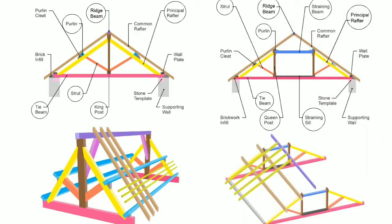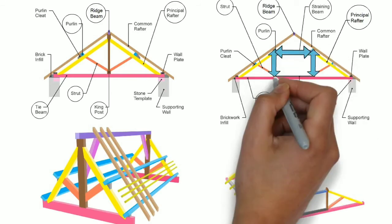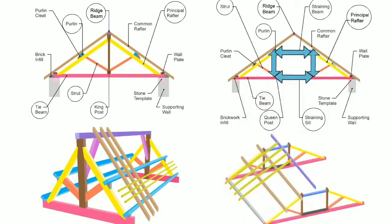Here we can see two queen posts, straining beam, and straining sill are additional. Otherwise, rest of the components are same as king post truss.